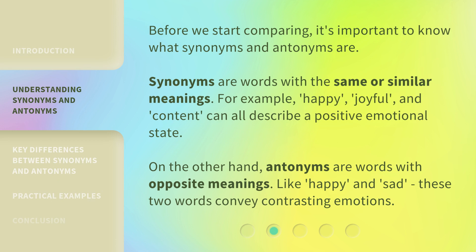Before we start comparing, it's important to know what synonyms and antonyms are. Synonyms are words with the same or similar meanings. For example, happy, joyful, and content can all describe a positive emotional state. On the other hand, antonyms are words with opposite meanings. Like happy and sad, these two words convey contrasting emotions.